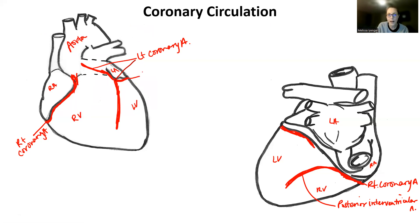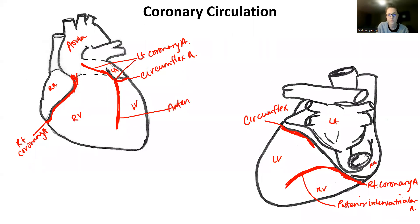The branch that goes backwards is called the circumflex artery, and the one that comes forward is the anterior interventricular artery. The left coronary artery supplies the entire left side of the heart — the left atrium, and the left ventricle on the anterior and the posterior sides.